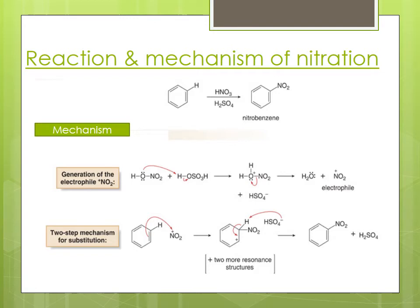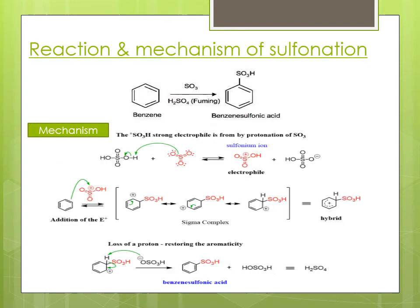Reaction and mechanism of sulfonation: benzene reacts with fuming H₂SO₄ to form benzene sulfonic acid. In this reaction, H₂SO₄ itself acts as a catalyst, and one sulfuric acid molecule protonates another molecule to generate the electrophile. This electrophile attacks on the benzene ring to form the arenium ion, and protons are removed in the last step to form benzene sulfonic acid.